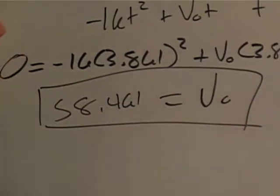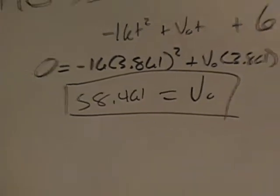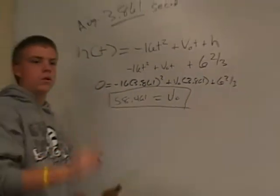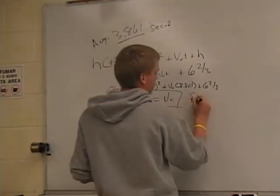So your initial velocity is 58.461. In other words, the amount of speed going up from the initial point of release is going to be 58.461 feet per second.